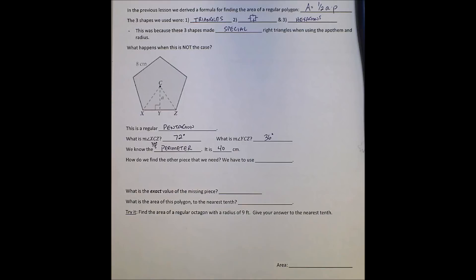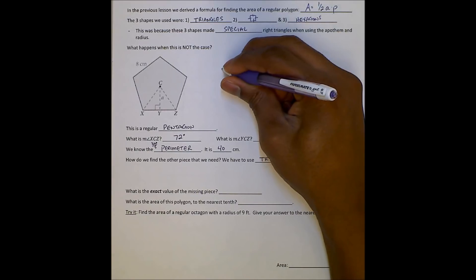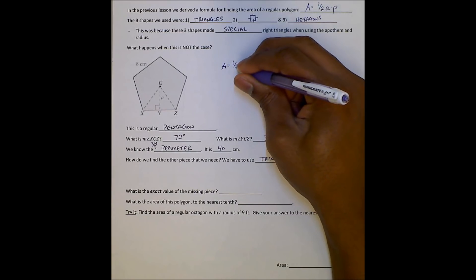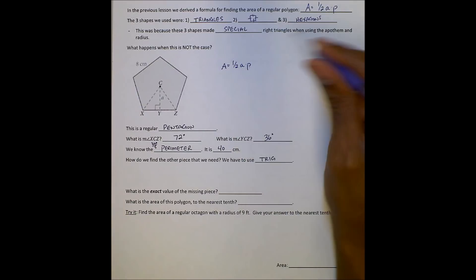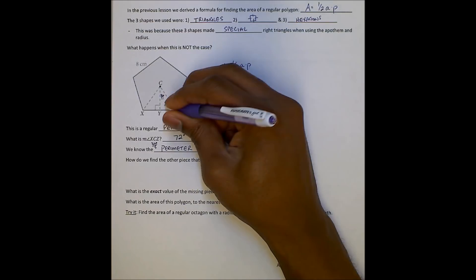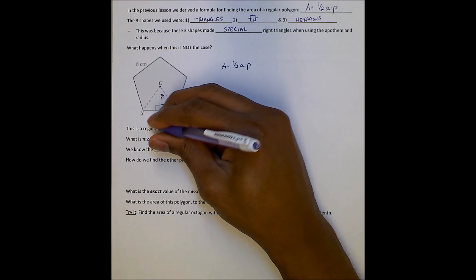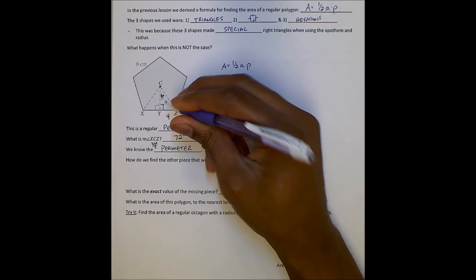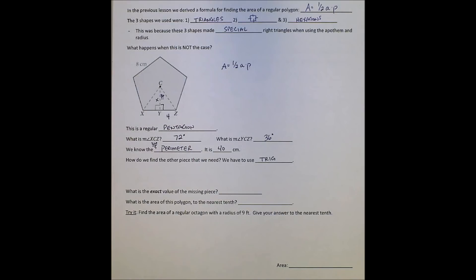And how do we find the other pieces that we need in order to find this? We have to use trig. Because remember, for our area, and that's what we're going to find here, area equals 1 half the apothem times the perimeter. Like we said, we know the apothem is 40. I'm sorry, the perimeter is 40. Now we have to find the apothem. And so with this information, I have this is 36, this is a 90 degree angle. This side was 8, so when we split it with the apothem, that's going to be 4. We have to find this, X. And we have to use trig.